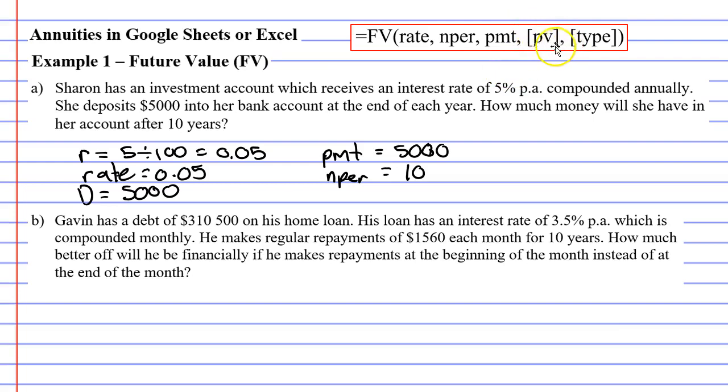PV stands for present value. If Sharon had started with some money already in her investment account that amount would have gone in place of PV. And finally type. Type is talking about whether the money goes in at the beginning of the time period or at the end of the time period.